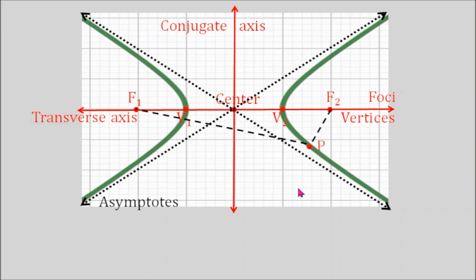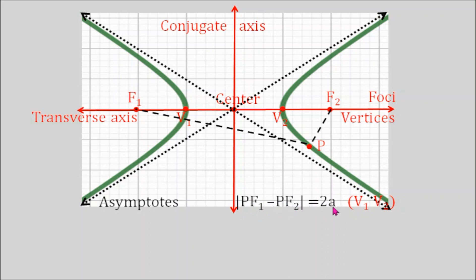To illustrate the definition of hyperbola, we pick a point P on the hyperbola. The absolute value of the distance from P to F1 minus the distance from P to F2 is always equal to 2a, a constant. Actually, 2a is the distance from vertex 1 to vertex 2. So we can write: the absolute value of PF1 minus PF2 equals 2a.